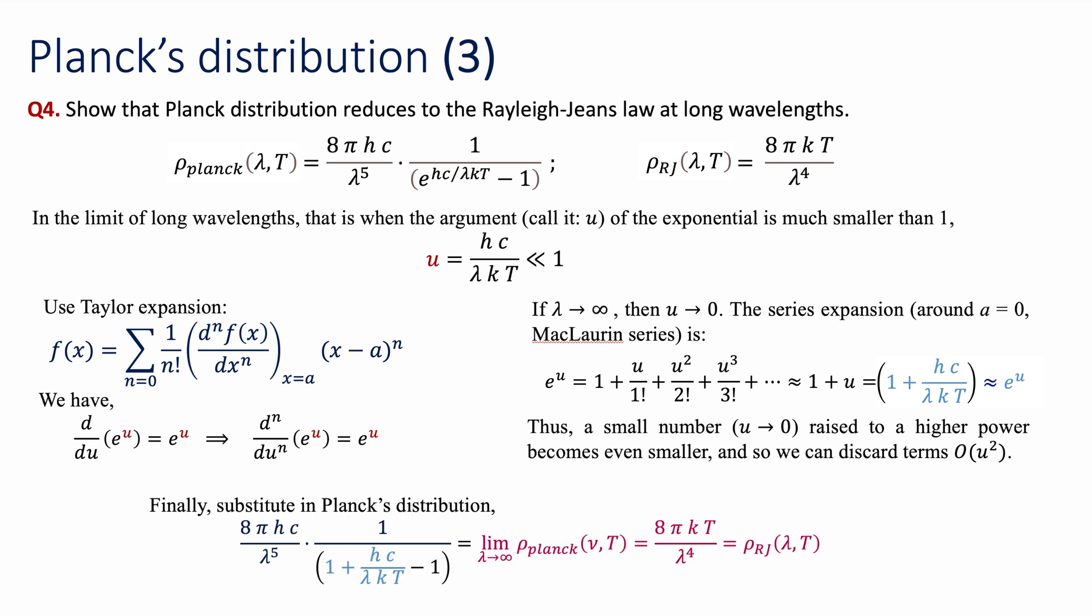Finally, what I have to do is to substitute into Planck's distribution. Instead of e to the power of u, I put 1 plus u, and then I cancel everything that I can cancel. 1 minus 1 is 0, hc cancels with hc, 1 of this lambda cancels with 1 of this lambda, and then I end up with this expression, which is exactly the same as we wrote down as being Rayleigh-Jeans law.